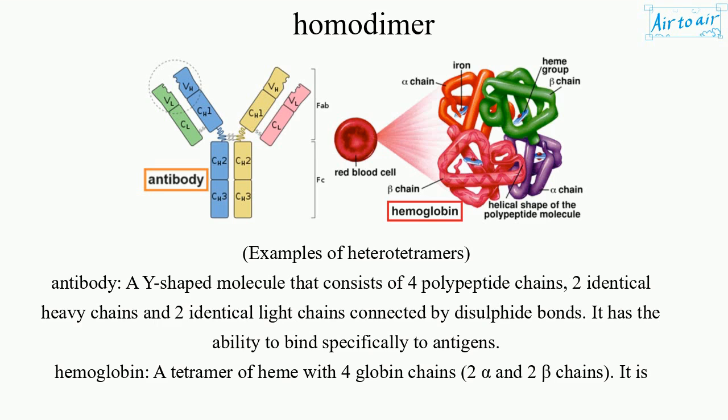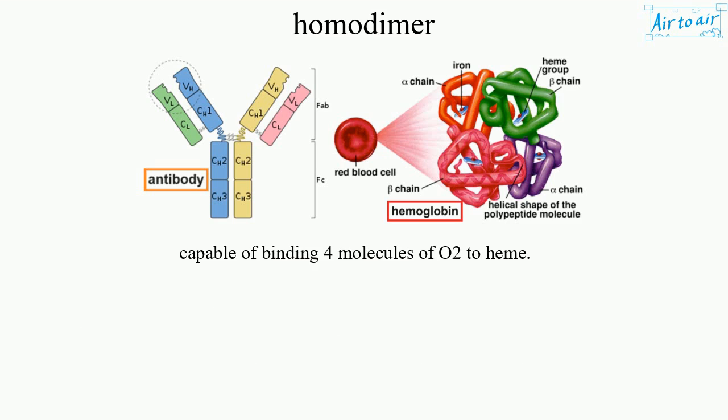Hemoglobin: a tetramer of heme with four globin chains, two alpha and two beta chains. It is capable of binding four molecules of O2 to heme.